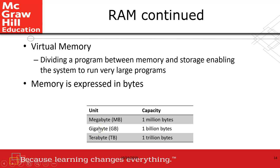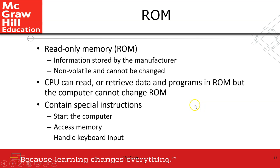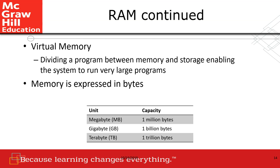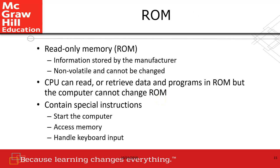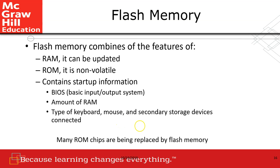ROM — Read Only Memory — is a permanent and non-volatile storage. It stores information about computer hardware. When you turn off the computer, the information is still there. The CPU can read and retrieve data and programs in ROM, but we cannot change it because the data and instructions are set by the manufacturer. The key difference: RAM is temporary and volatile, while ROM is permanent and non-volatile storage.